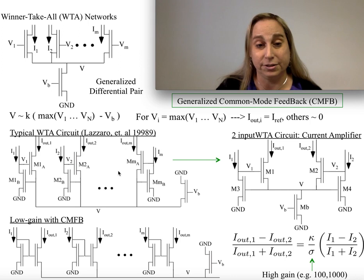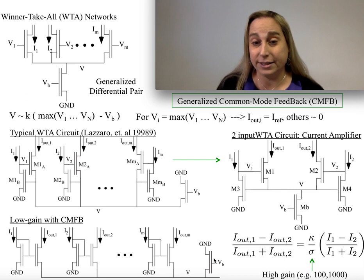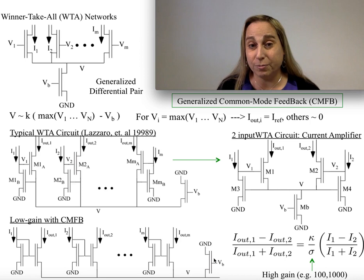I can do a lower-gain structure by having current mirrors with a current source constraint. But at the same time, having the gain is useful because sometimes you want to be able to have a whole bunch of inputs and know which is the largest of them, even if that might only be by a small amount. And that turns out to be very helpful.